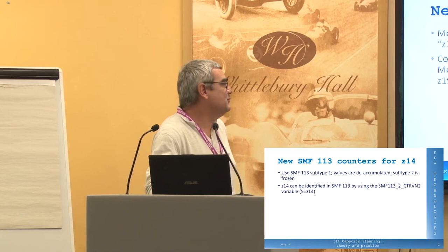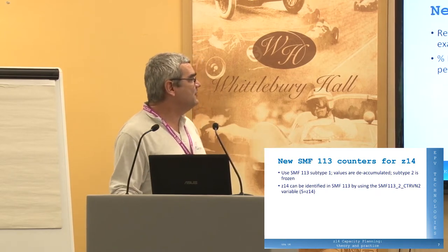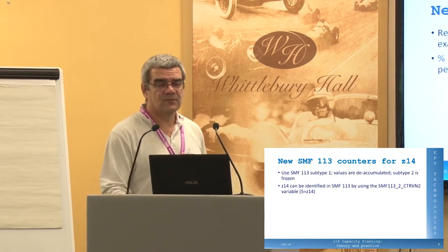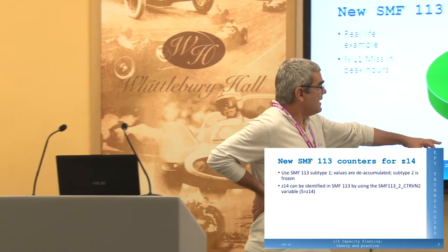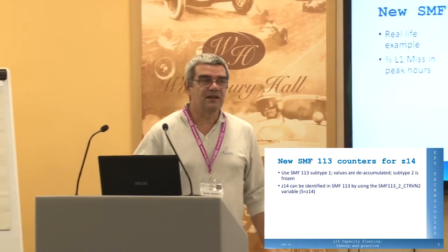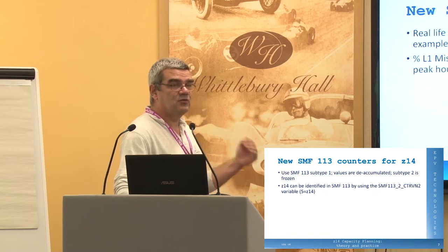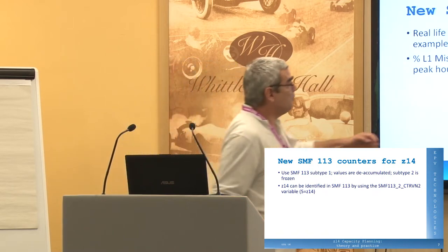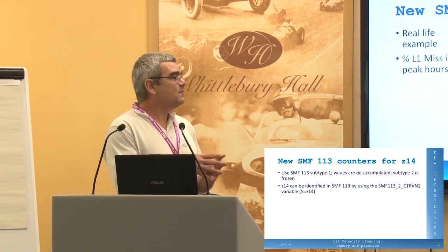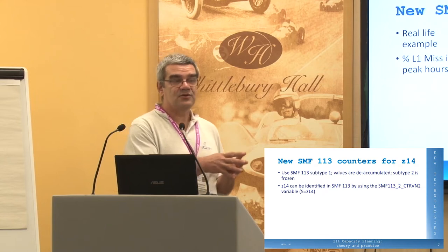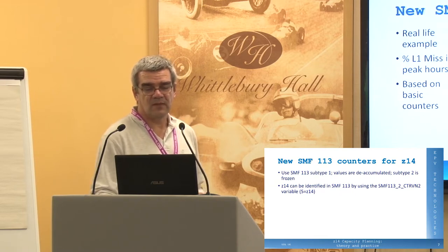This is a real example from a customer — no names, no values, but a real situation. This pie chart shows that during peak hours at this customer site, 96 percent of the time the machine can find the data in the structure where it expects it to be — everything is working like clockwork. Only four percent of the time there is a level one miss, meaning the machine has to do something to retrieve the instruction and data.